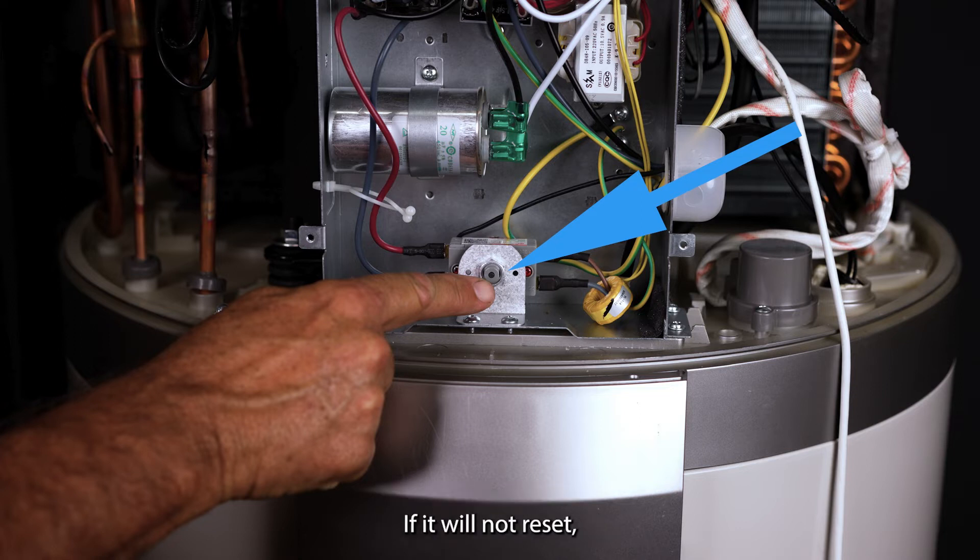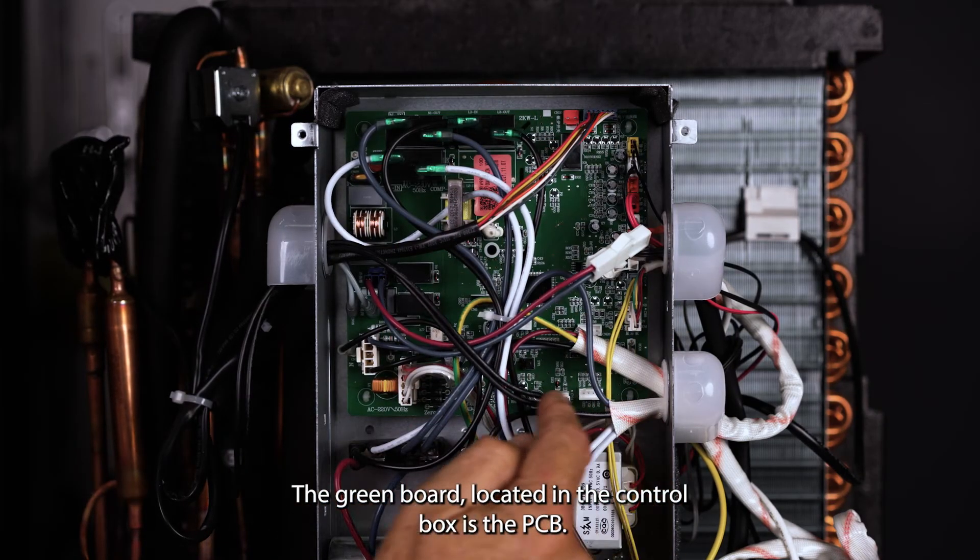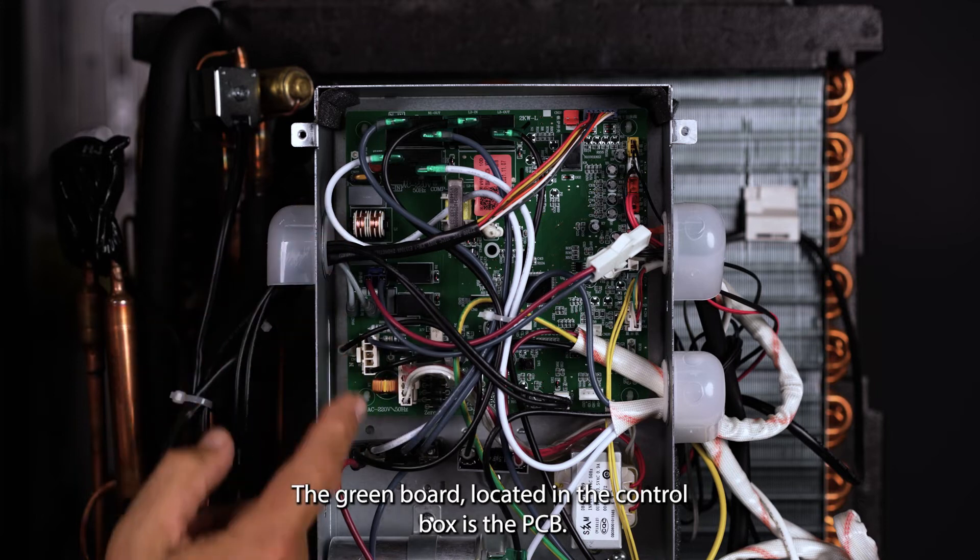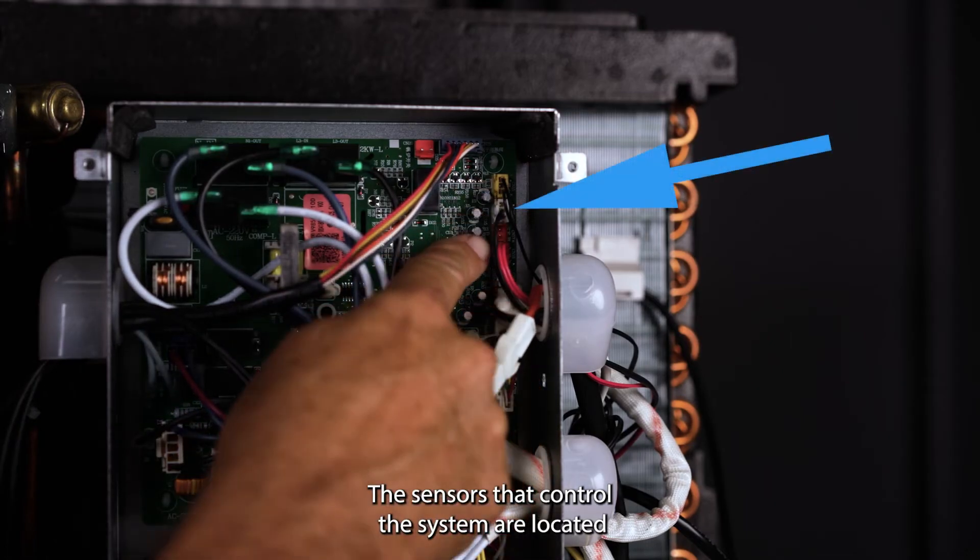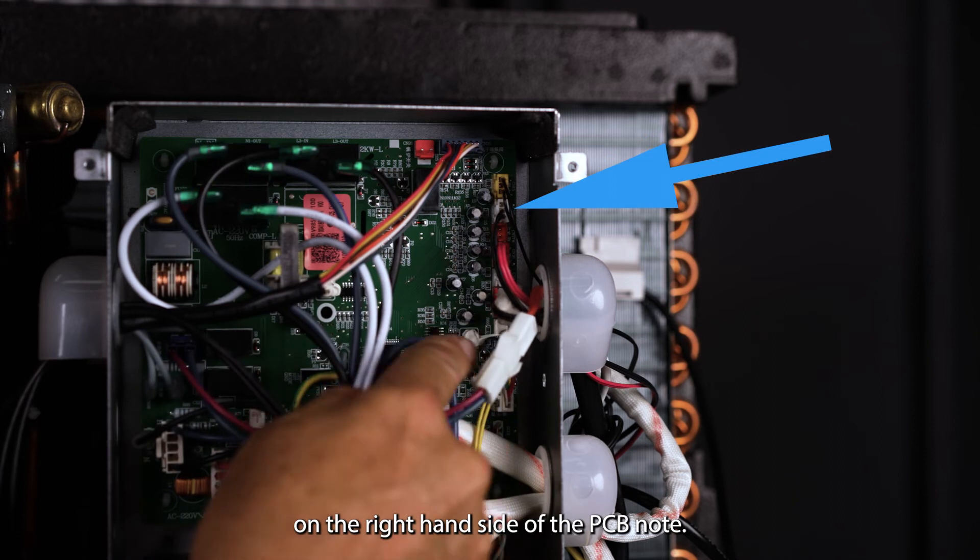If it will not reset, call EnviroHeat for technical assistance. The green board located in the control box is the PCB. The sensors that control the system are located on the right hand side of the PCB.